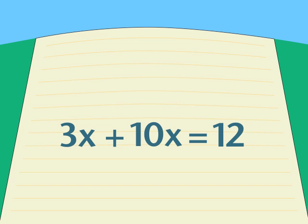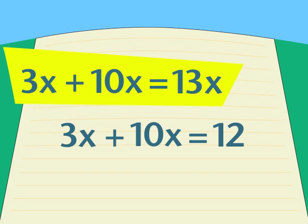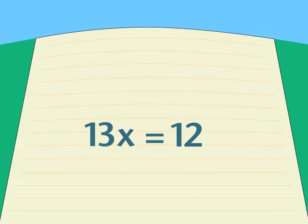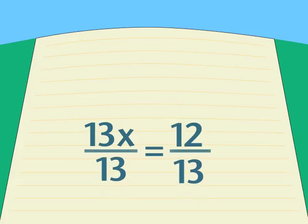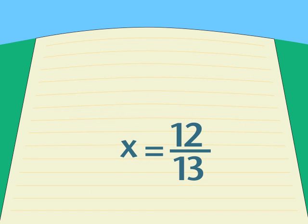If that all makes sense, let's finish simplifying. We combine like terms to get 13x equals 12. And then, to get 1x on the left, we divide both sides by 13. And our answer is x equals 12 over 13. 12 thirteenths cannot be reduced any further, so that's the solution.